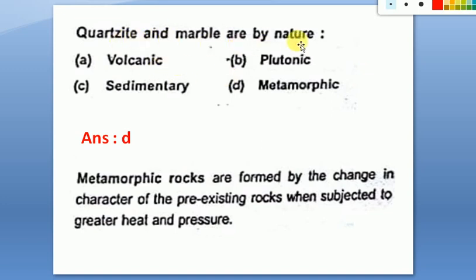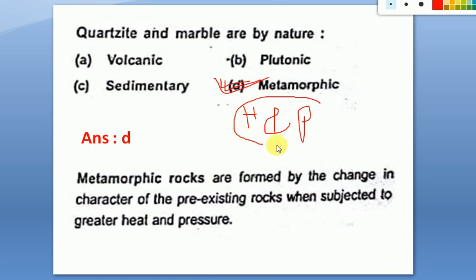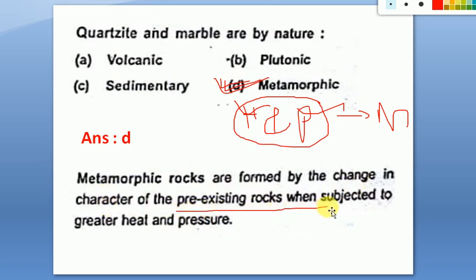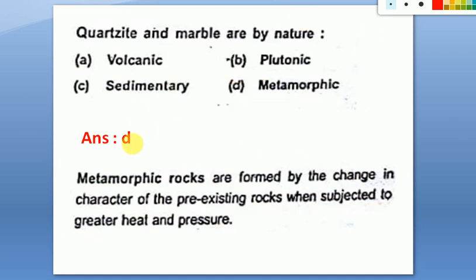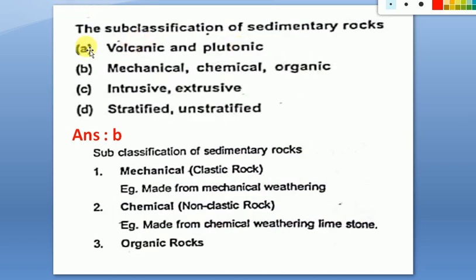Next question: quartzite and marble are by nature metamorphic rocks. Whenever you see the words heat and pressure, think metamorphic rock. Metamorphic rocks are formed by changes in characteristics of pre-existing rocks when subjected to great heat and pressure. So the answer is metamorphic rock.